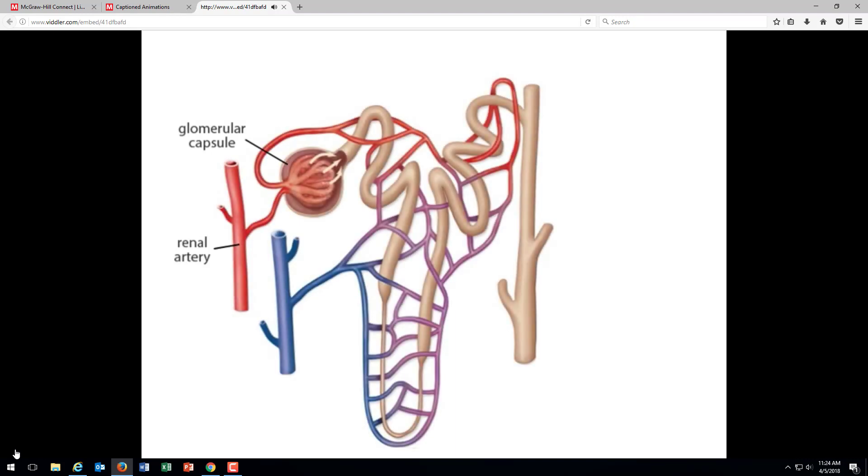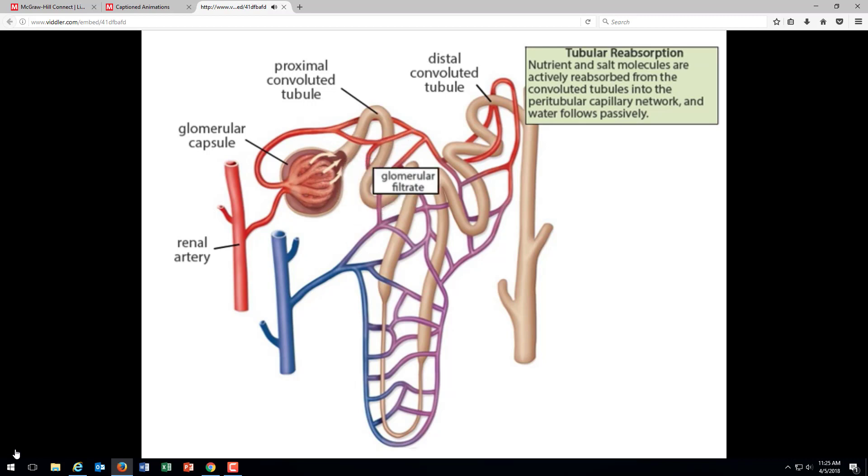It is during the next stage, called tubular reabsorption, that the body distinguishes between the important nutrients and the waste products that are destined for excretion. Tubular reabsorption occurs in the proximal and distal convoluted tubules. As the glomerular filtrate proceeds through the proximal convoluted tubule, sodium ions are actively reabsorbed and chlorine ions follow. As the sodium and chloride move back into the nearby capillary, water follows by osmosis.